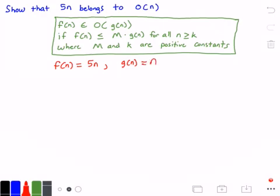Now, where did I get that from? Well, I got that from right there. So, so far, so good. And what we want to prove or show to be true, we want to show that f of n is less than or equal to M times g of n for all values of n greater than or equal to k.